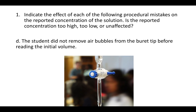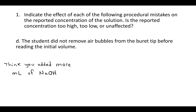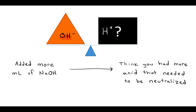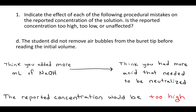Case D says the student did not remove air bubbles from the burette tip before reading the initial volume. If that happened, when the bubble of air was expelled, you would think you were adding NaOH in terms of the change in volume in the burette. So the change in volume would be bigger — you really just added air, but you would think it was NaOH. So you'd think you added more NaOH than you actually did, which means you would think you needed to neutralize more acid than there actually was, and the reported concentration would be too high.